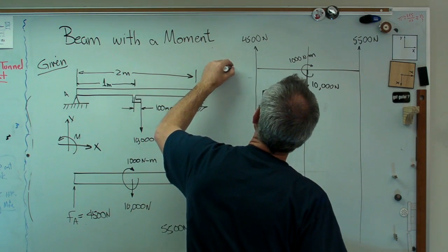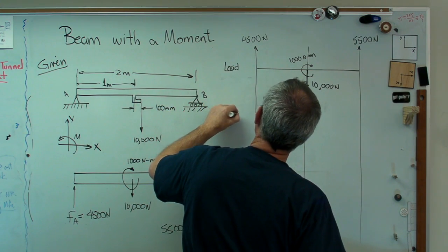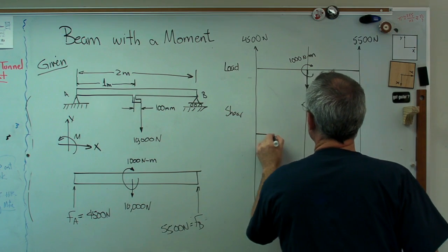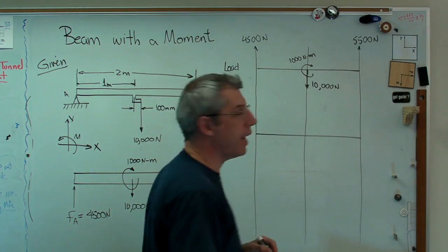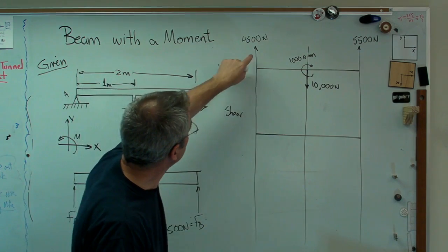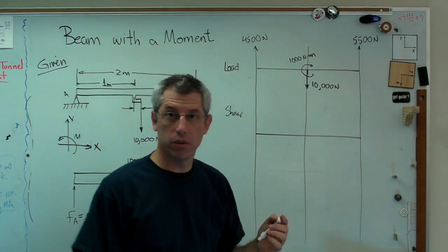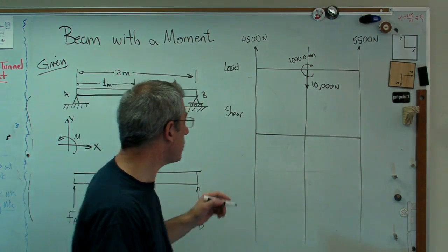I'm going to have this big 10,000 newton load there. And I've got my point moment here of 1,000 newton meters. So there's the load part of the diagram. All I've done is just transcribe stuff back over to here. So that's easy.